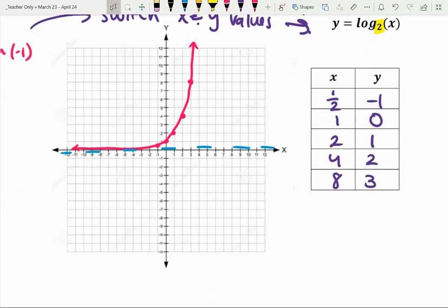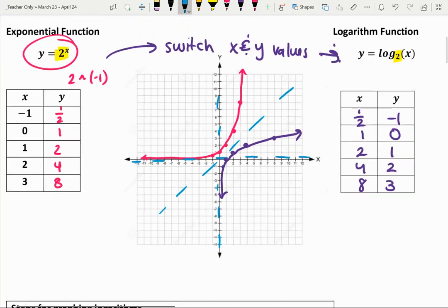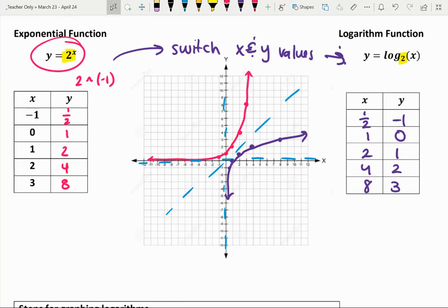So then I can graph those coordinate points. 1/2, negative 1, 1, 0, 2, 1, 4, 2, and 8, 3. And again, another smooth curve here. So you'll notice that as inverse functions, a couple of relationships here. One, it's like a reflection over the line y equals x. And then we have another asymptote, this time a vertical asymptote. One thing to just keep in mind is like the domains and the ranges are basically switched for one another here. But the long story short is that if you can graph an exponential function, you can graph a logarithmic function.